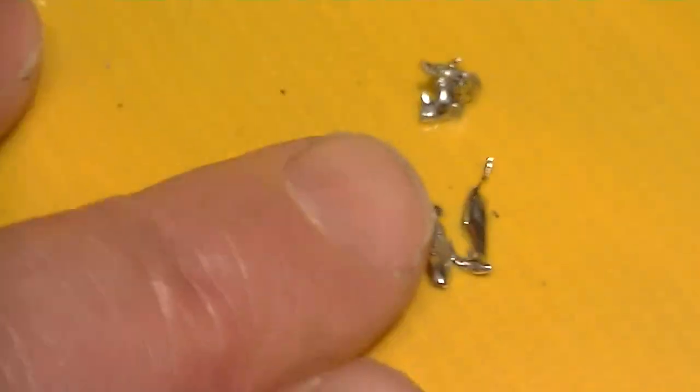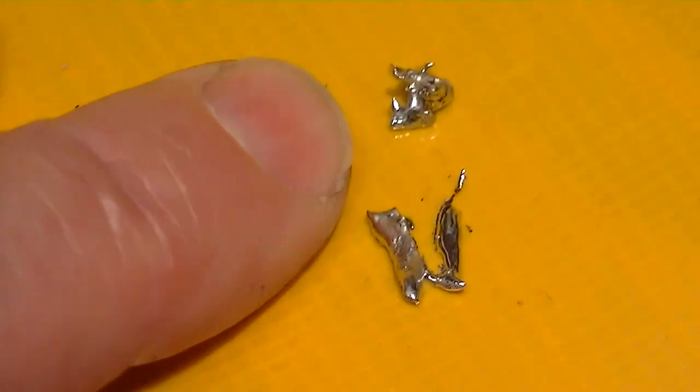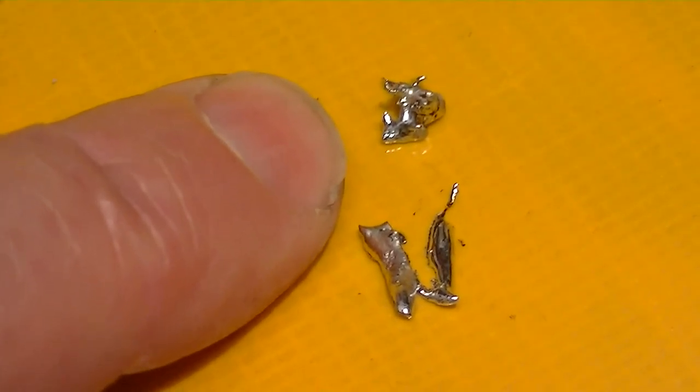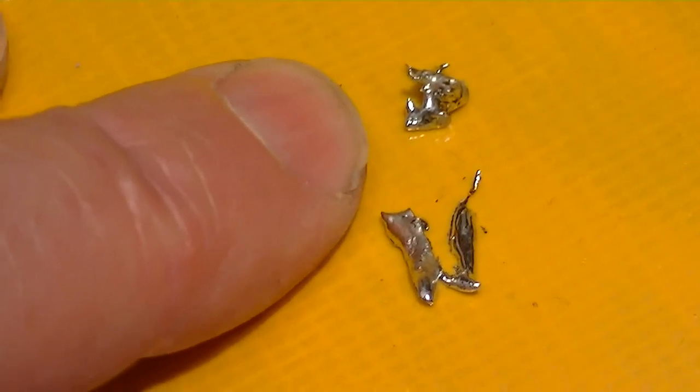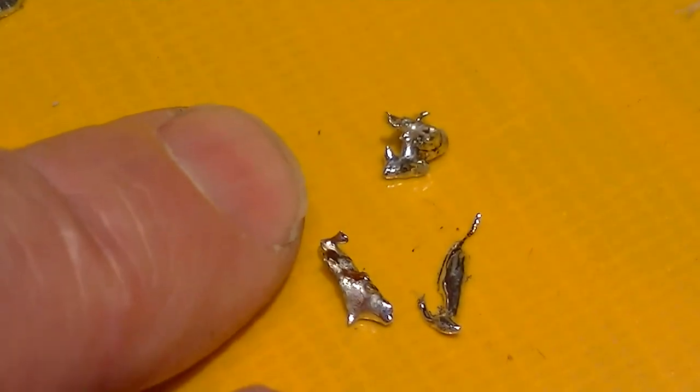So take a look at this pile over here. Here's my hand for reference. That crud right there, all of that stuff came off of two of the tube pins in the oscillator. All of that stuff, just from two tube pins.